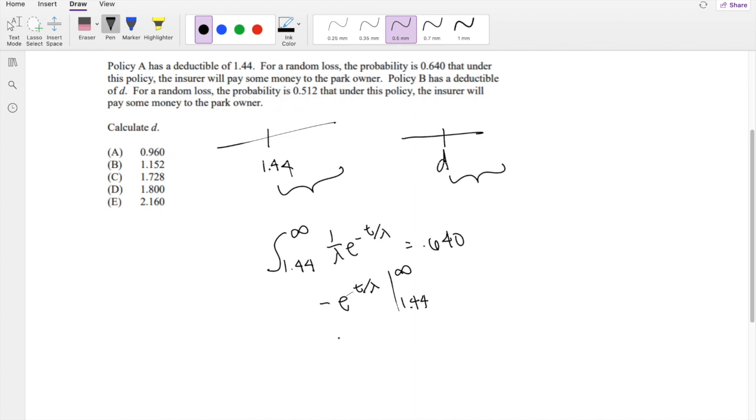So this is equal to, when you plug in infinity, this is just negative e to the negative t over a really big number. So that's just 0, right?